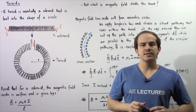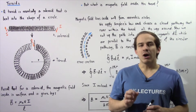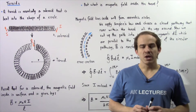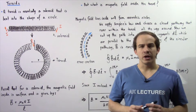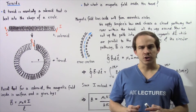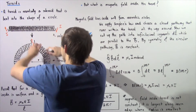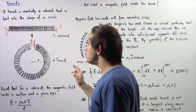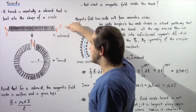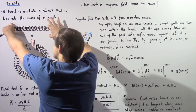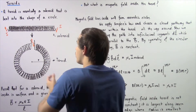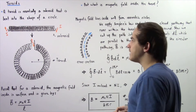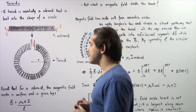In the previous several lectures we discussed a device known as a solenoid. Now we're going to examine a modified version of a solenoid known as a toroid. A toroid is essentially a solenoid that is bent into the shape of a circle. Suppose we have a solenoid consisting of N loops of wire carrying an electric current I. If we bend the solenoid into the shape of a circle, we get the toroid.